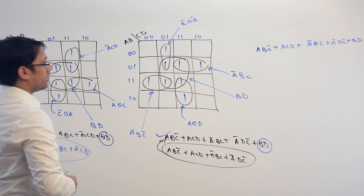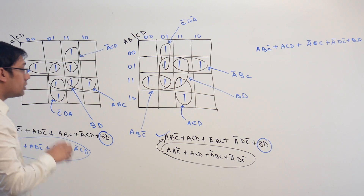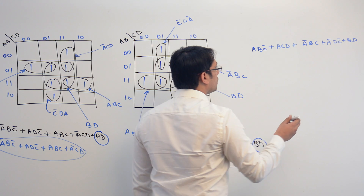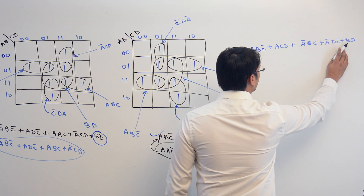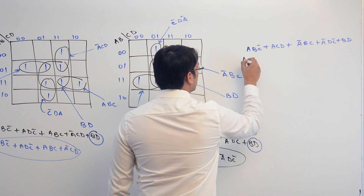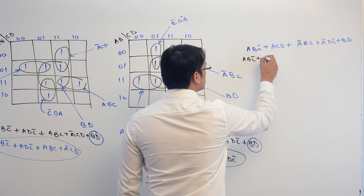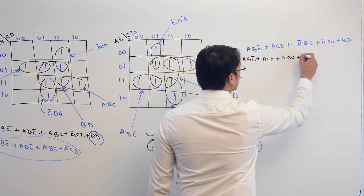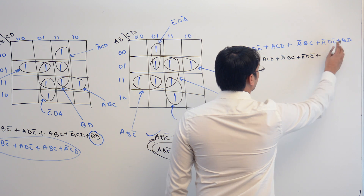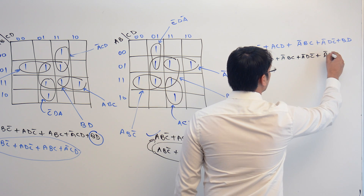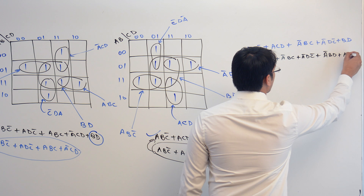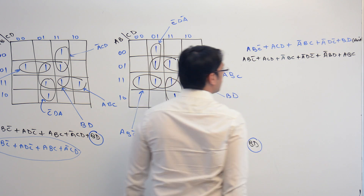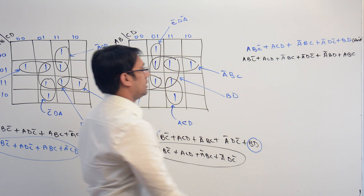What you can do is, in this equation, you can expand BD by taking A complement plus A, so BD becomes A complement B D plus A B D. So the equation becomes: A, B, C complement plus A, C, D plus A complement, B, C plus A complement, D, C complement plus A complement, B, D plus A, B, D.